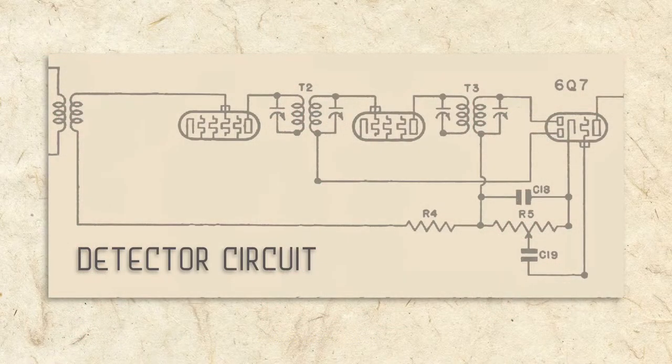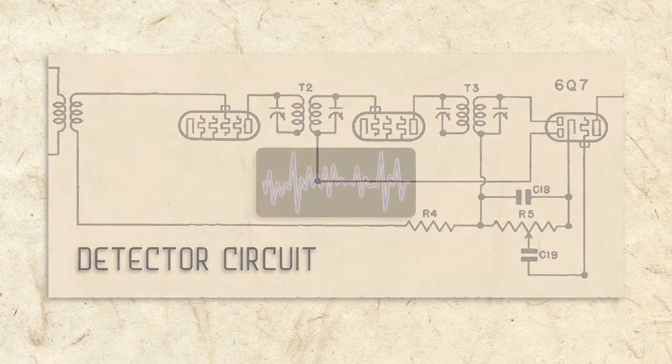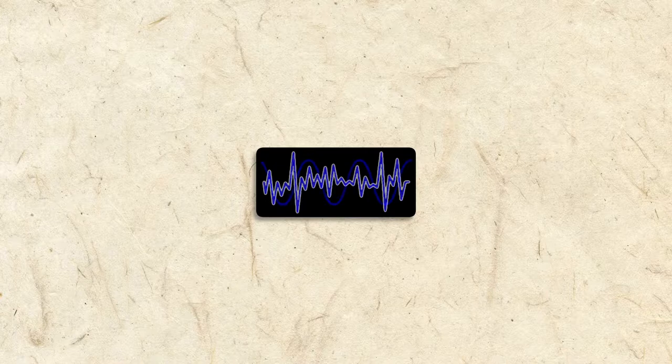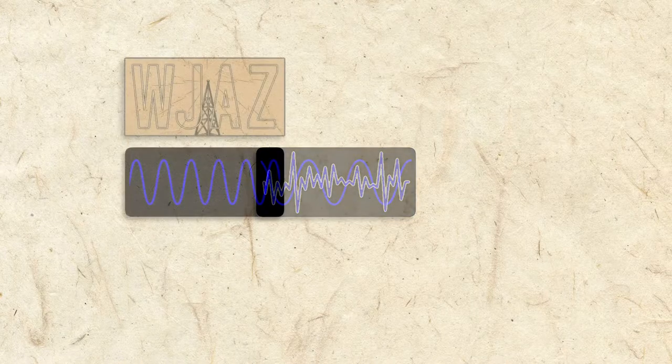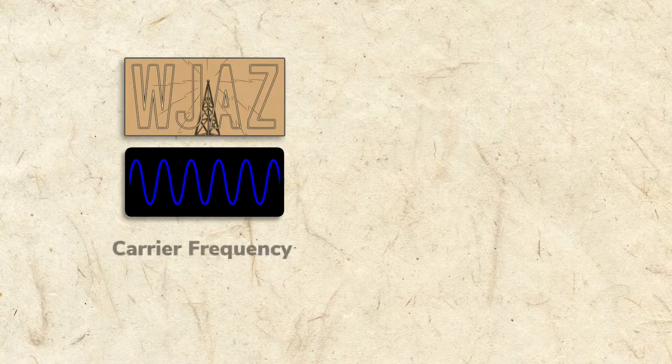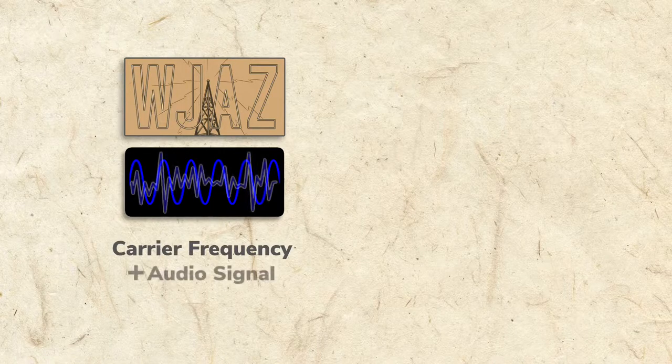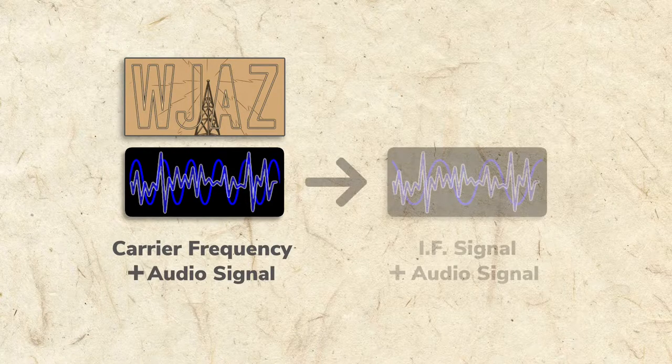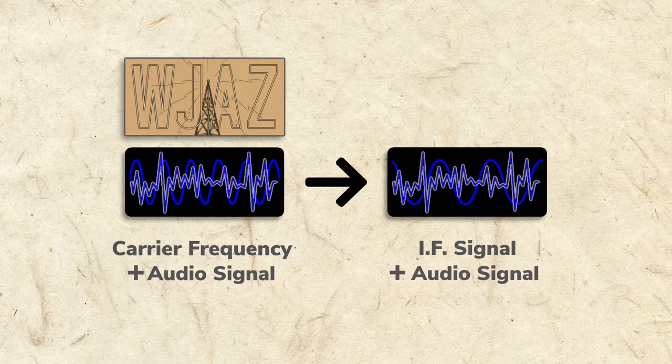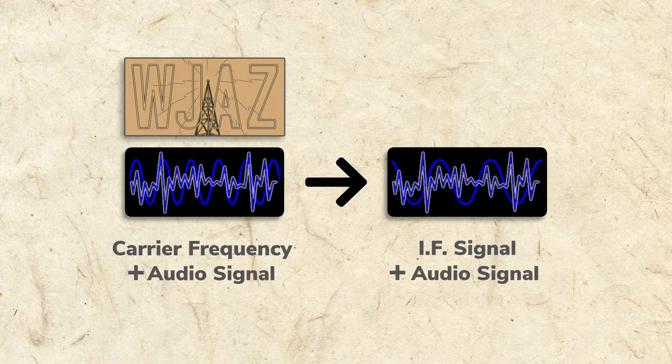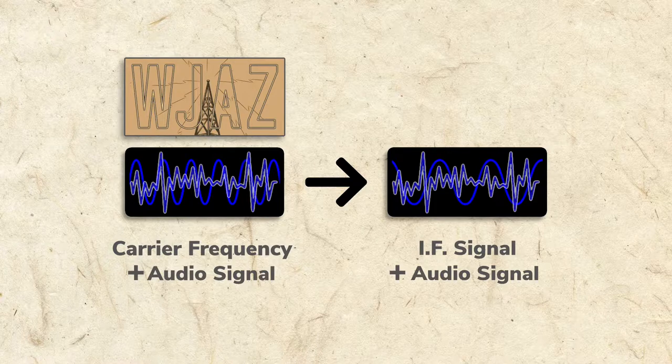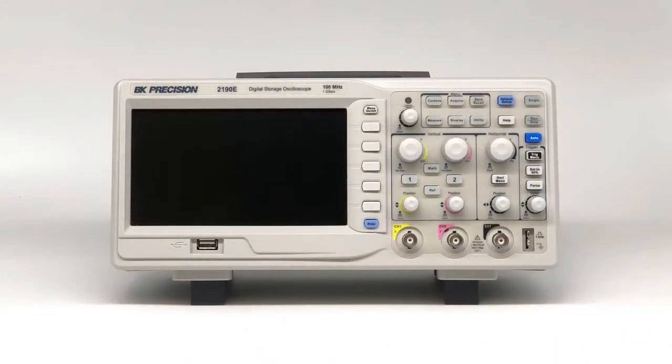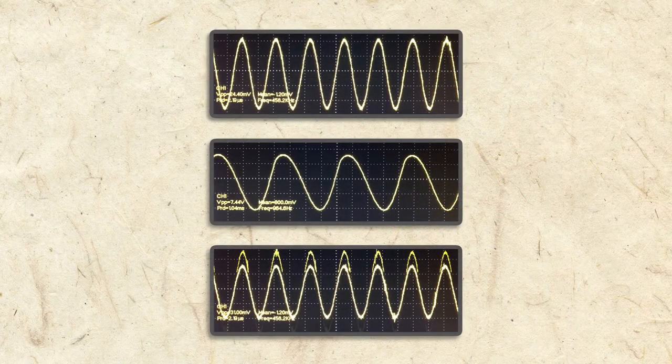Before I explain the detector circuit, it will be helpful to discuss how the audio signal is encoded in the IF. So far, I've told you that a radio station's transmitted frequency, called the carrier frequency, is encoded with the audio signal which is passed to the IF signal. The graphic I've shown to represent this has sufficed to this point, but now I want to use an oscilloscope to show you what the signals really look like.